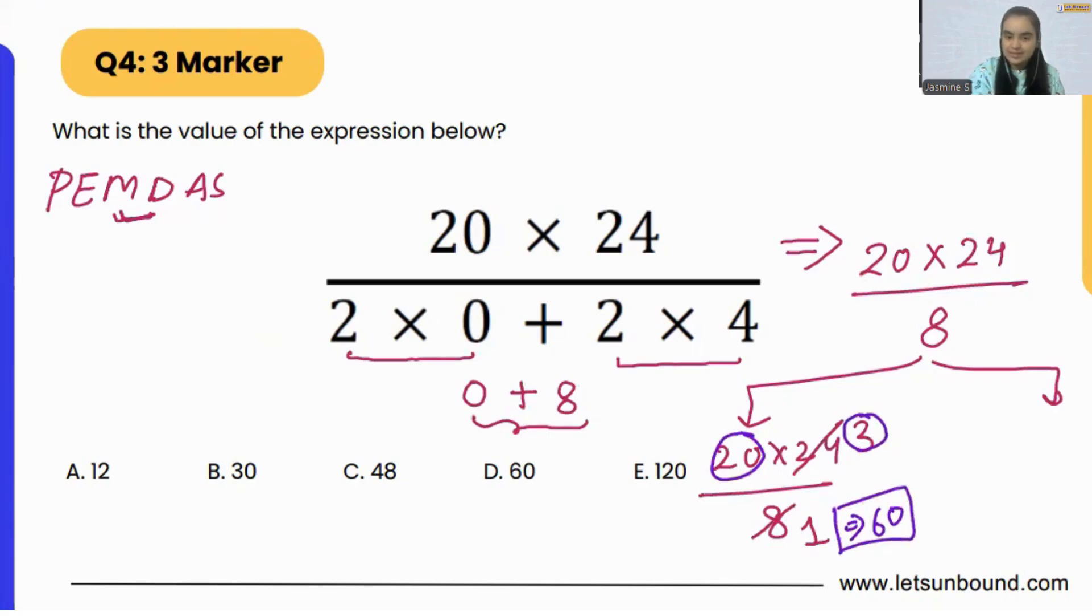You can apply another way as well, wherein you are actually multiplying 20 and 24. So 20 times 24 will be 480 divided by 8, which is again going to be 60.